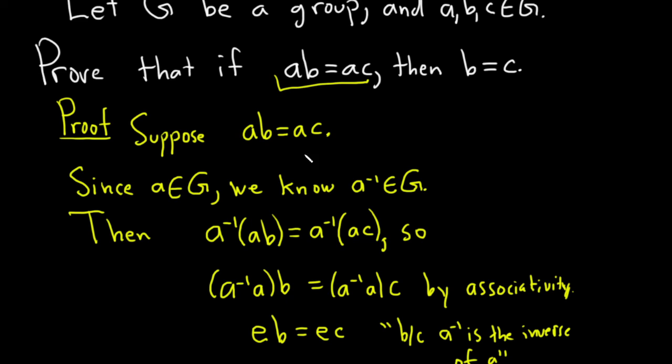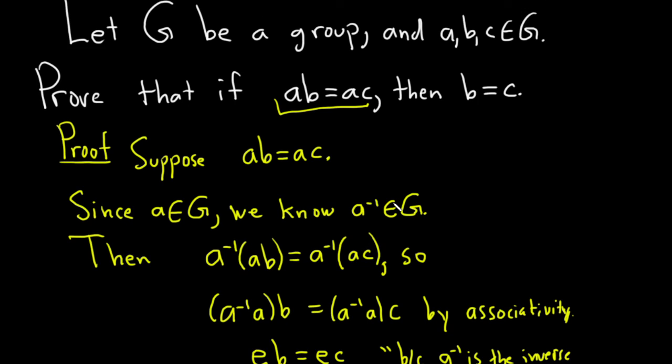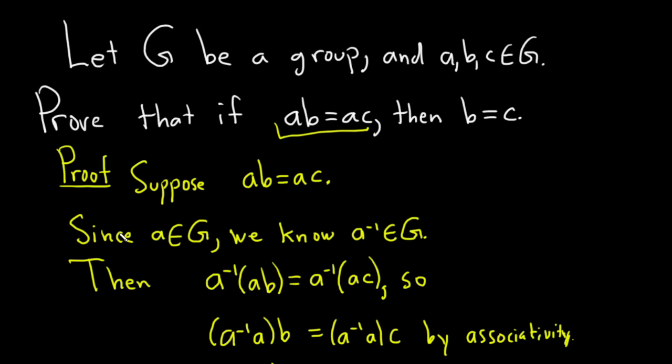So we would just like to cancel it like we do in normal math when we're dealing with numbers. But here we have a group, so we have to be a little bit more careful. So since a is in G, we know because G is a group, the inverse of a is also in G.